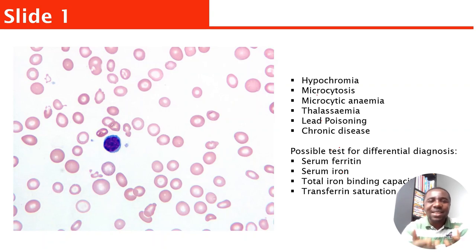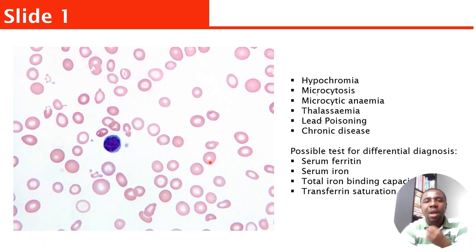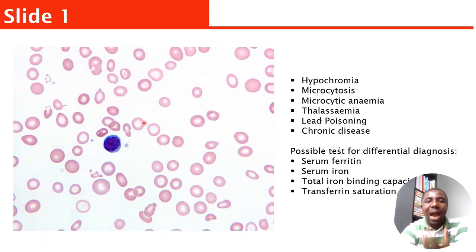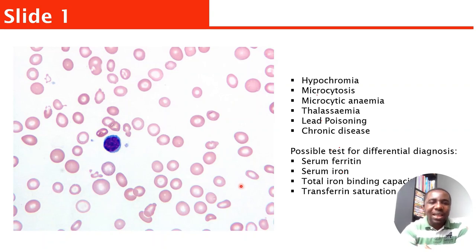Look at this slide. You're going to see there are a lot of cells with different shapes and sizes. The center pallor of the red cells — they are not properly stained. There are different sizes: some are small, some are big, some medium. This is a typical example of microcytic anemia. There is a lot of microcytosis — the red cells are smaller in size. Because of the lack of staining at the center pallor, it's called hypochromia. Different sizes is called anisocytosis, and different shapes is called poikilocytosis.